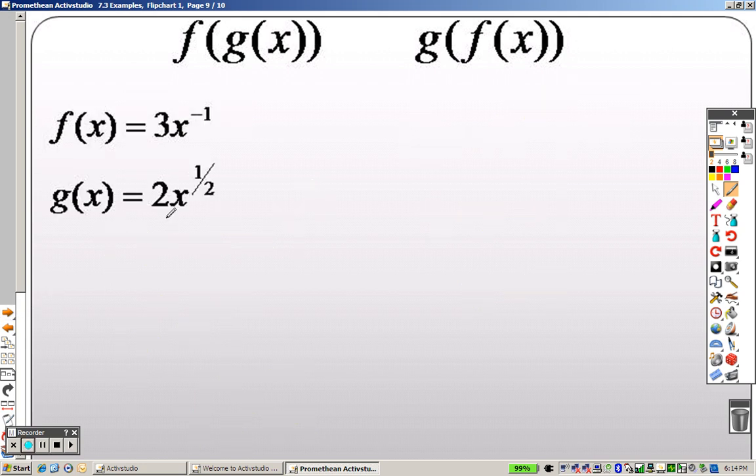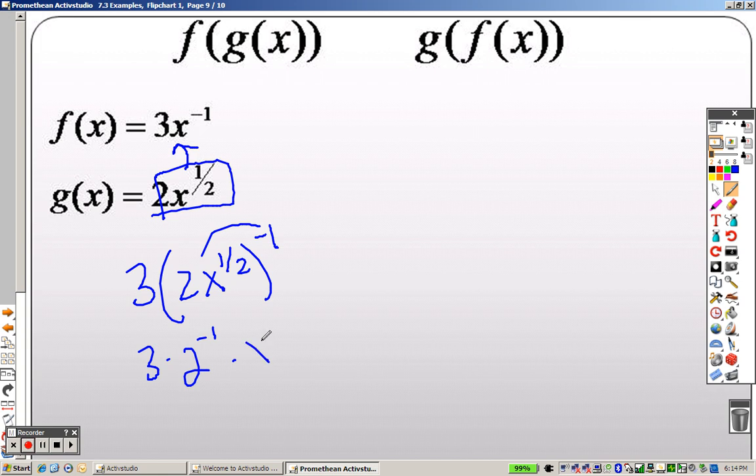Okay, trying out this one. Then you take all of g of x, right, and you plug it in. So you end up getting 3 times, that's 2x to the 1 half to negative 1. So I take that through. It's like saying 3 times 2 to the negative 1 times x to the negative 1 half.